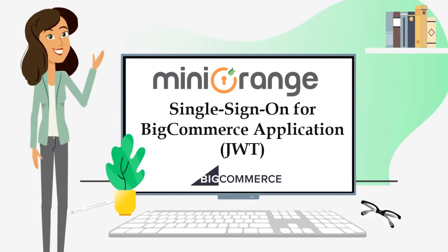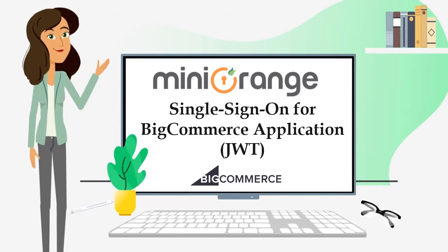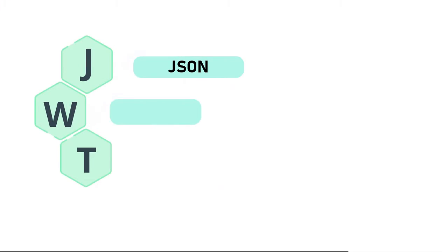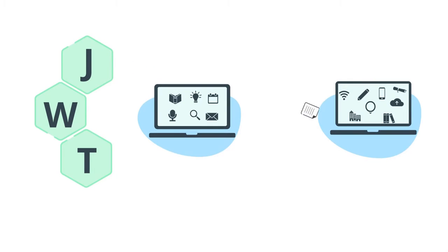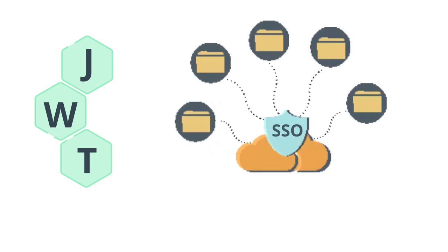In this video we are going to try and set up single sign-on for BigCommerce application using JWT protocol. JWT stands for JSON Web Token, which is a JSON-based open standard for passing claims between parties in a web application environment. The tokens are designed to be compact, URL safe, and usable, especially in a web browser single sign-on context.